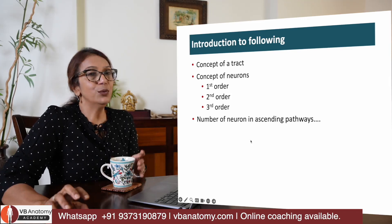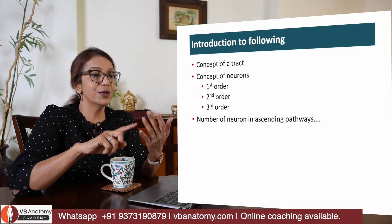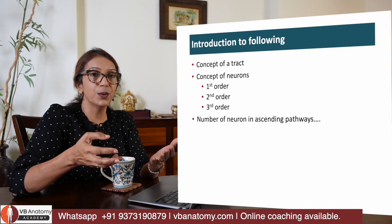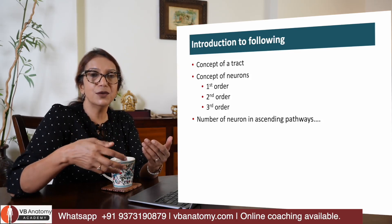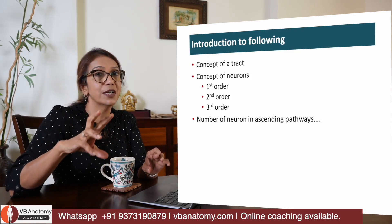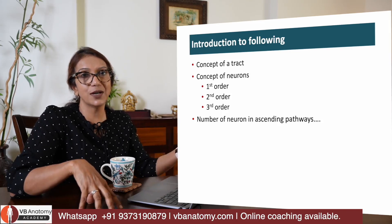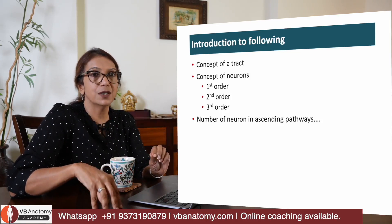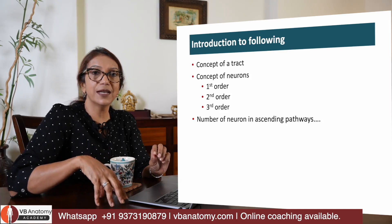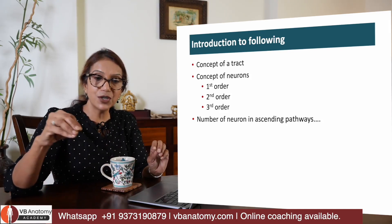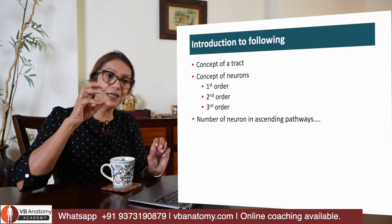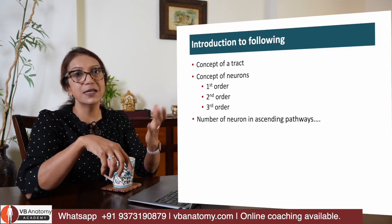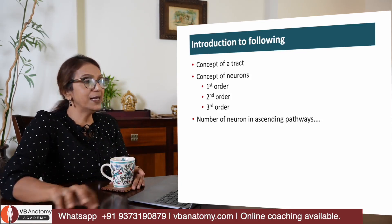Before we study these tracts, you need to understand the concept of first order neuron, second order neuron, and third order neuron, and what actually is a tract. I have covered this in my lecture on pain, temperature, touch, and pressure pathways — please go check that out. Just remember there will be three neurons in this tract, and a tract consists of fibers originating from similar cells in a particular spinal cord location, carrying the same modality, and relaying in the same area of the cerebral cortex.